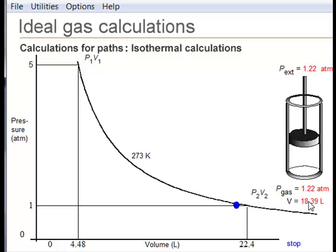The reversible path is idealized and is assumed to be at equilibrium. Look at the piston. The external pressure is equal to the internal gas pressure, so there should be no change.